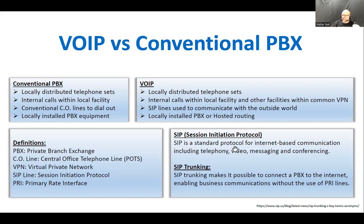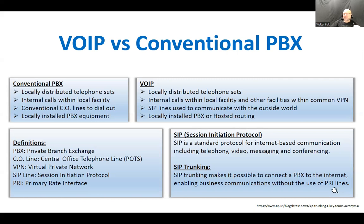SIP trunking — trunking is bundling things together. SIP trunking makes it possible to connect a PBX to the internet, enabling business communications without the use of PRI lines. PRI stands for Primary Rate Interface. So instead of having, say, five physical lines, you purchase a PRI service, and on two pairs — one transmit, one receive — you can have those five lines multiplexed using broadband multiplexing.